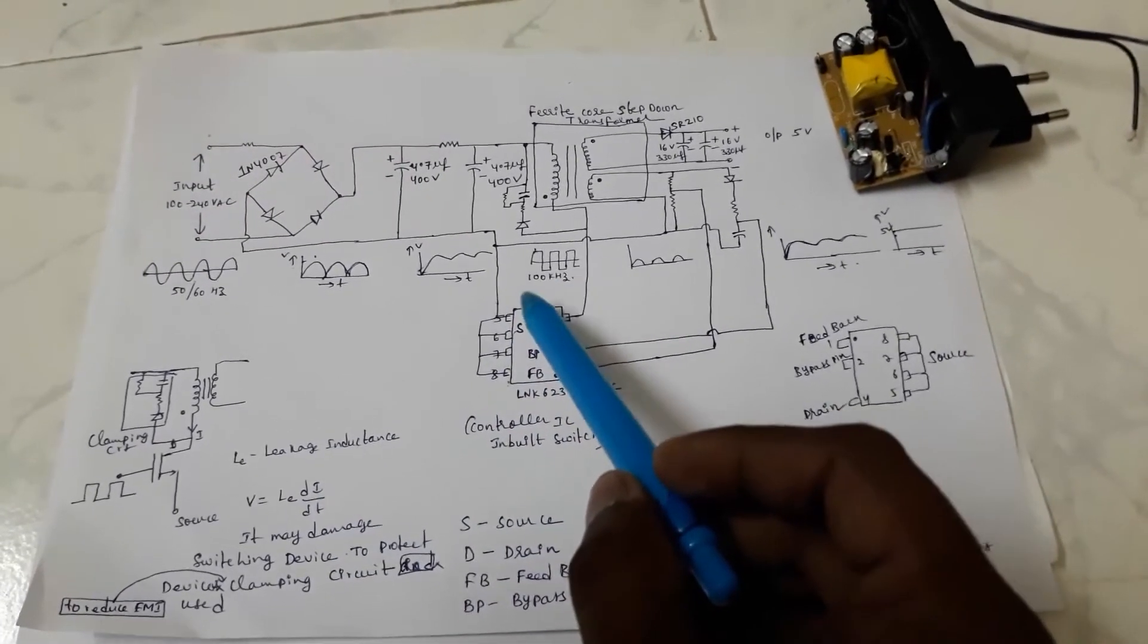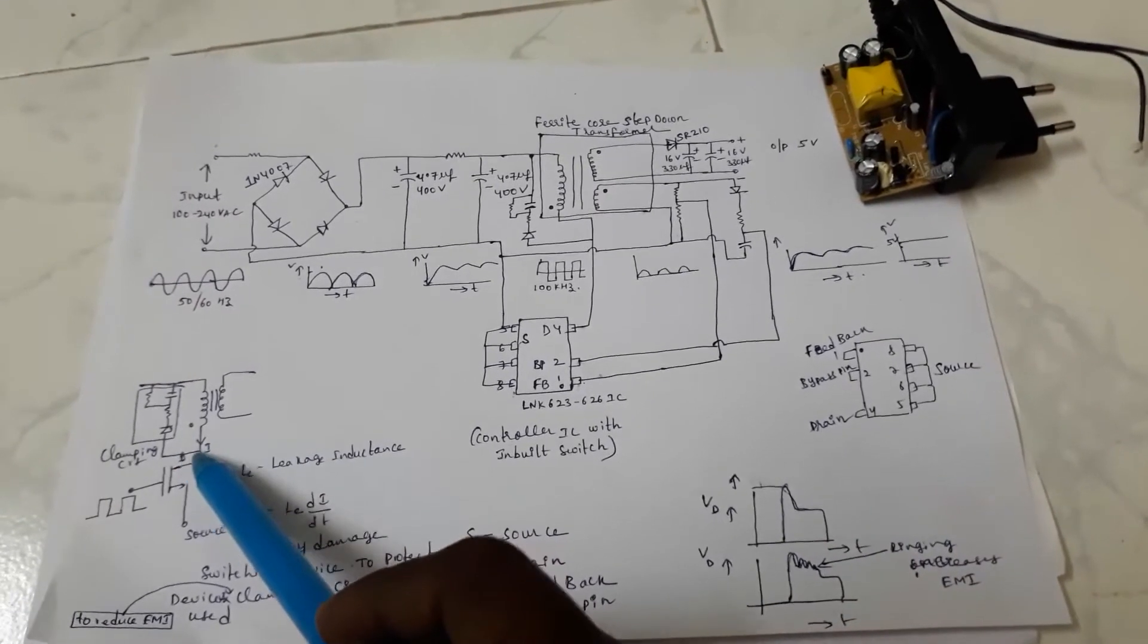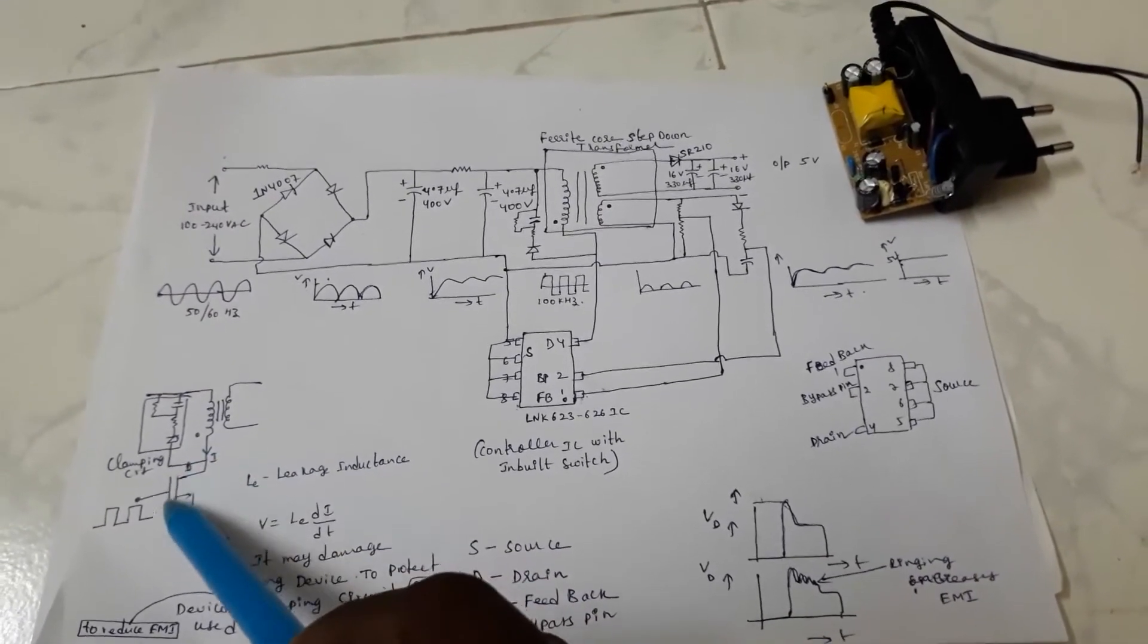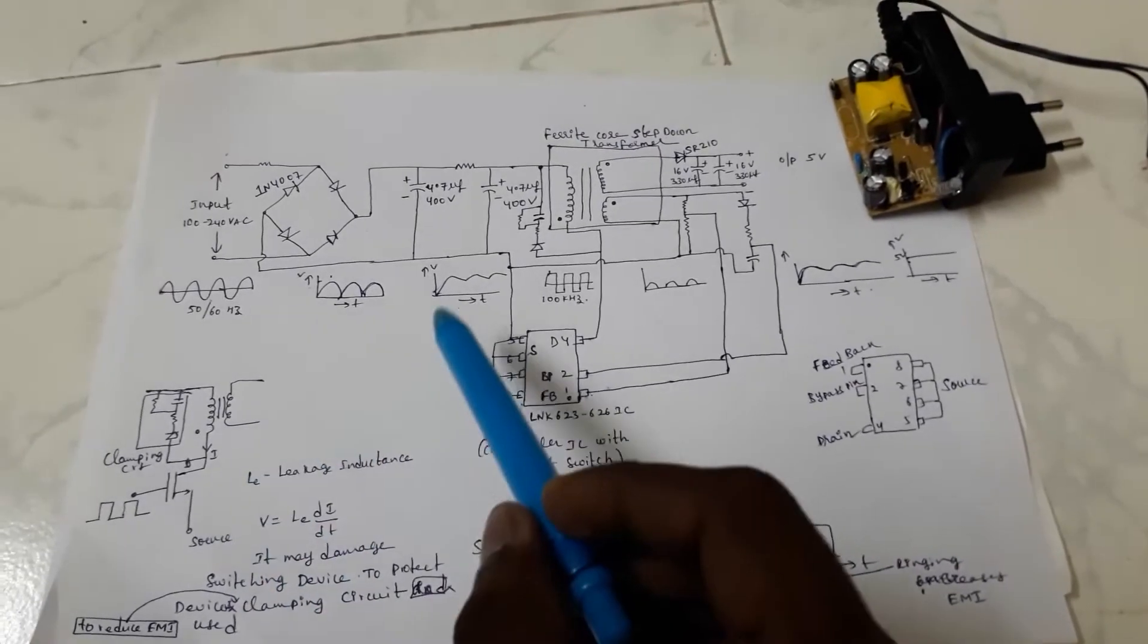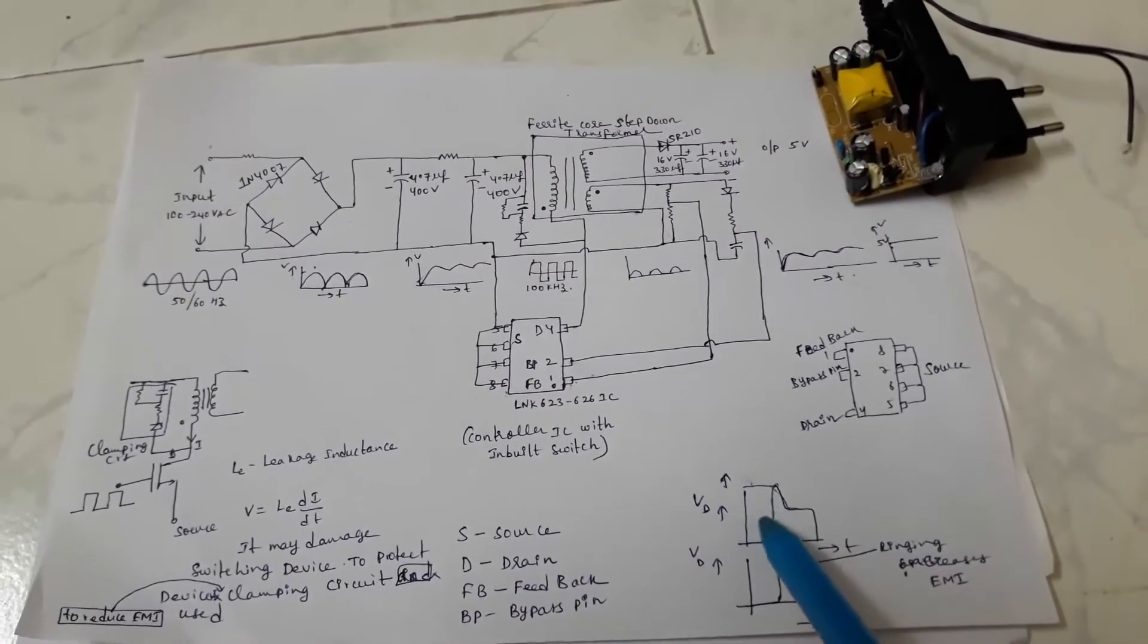The voltage across the drain will be very high and it may damage the MOSFET switching device. Another reason for using the clamp circuit is that the drain voltage during switch off may exceed and damage the MOSFET.